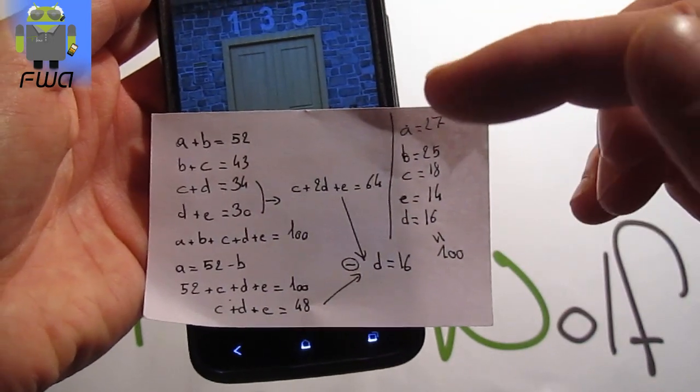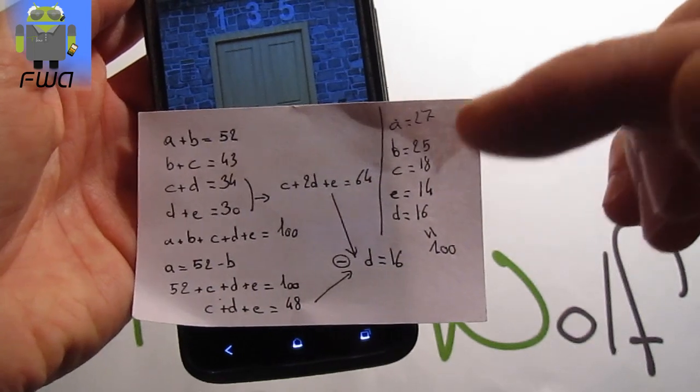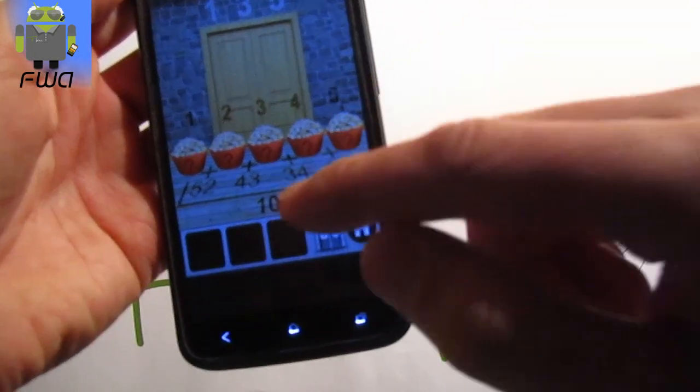So the result is a, c, e. So 27, 18, 14. Okay.